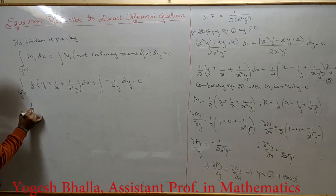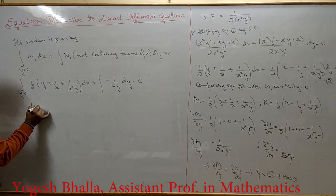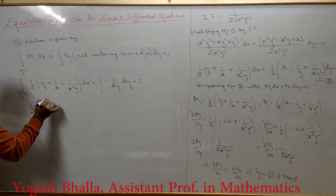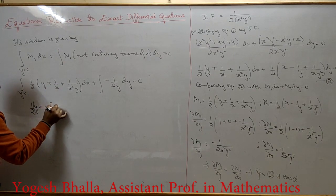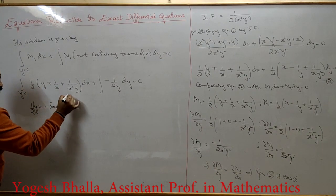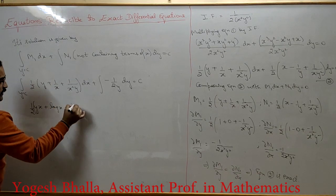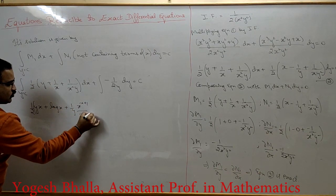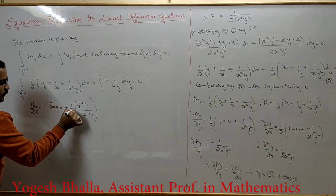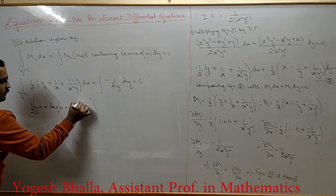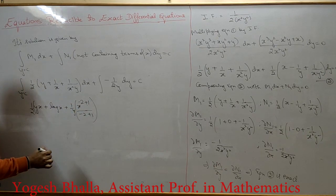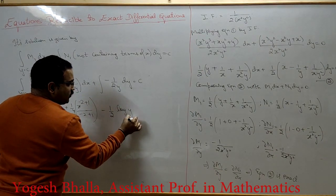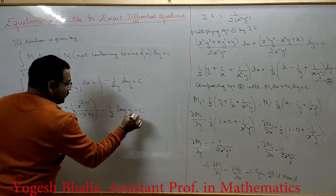Integrating M1 with respect to x, keeping y constant: ∫(y/2) dx = xy/2; ∫1/(2x) dx = (1/2)log x; ∫1/(2x²y) dx = (1/2y)·(x^(−1)/(−1)) = −1/(2xy). Then adding ∫−1/(2y) dy = −(1/2)log y. So we have: xy/2 + (1/2)log x − 1/(2xy) − (1/2)log y = c.